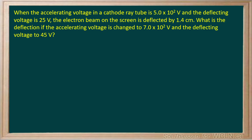Our biggest asset when solving these deflection cathode ray tube problems is knowing that the deflection is proportional to the deflecting voltage over the accelerating voltage. So this initial deflection of 1.4 centimeters is proportional to the deflecting voltage over the accelerating voltage.